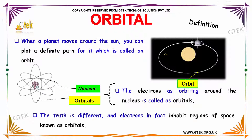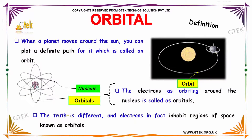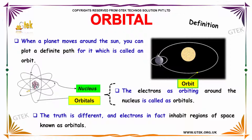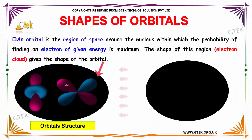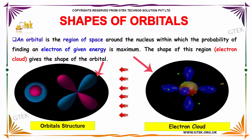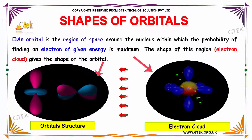When a planet moves around the sun, you can plot a definite path for it, which is called an orbit. The electrons orbiting around the nucleus is called orbitals. The truth is different, and electrons in fact inhabit regions of space known as orbitals. An orbital is the region of space around the nucleus within which the probability of finding an electron of given energy is maximum.